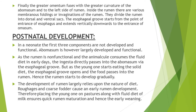Finally, when all these structures have been formed, the greater omentum fuses with the greater curvature of the abomasum and to the left side of the rumen. The greater omentum is a large flat adipose tissue layer that covers intraperitoneal organs and prevents the parietal and visceral peritoneum of the abdominal cavity from adhering to each other. In this way it covers the whole of the stomach.